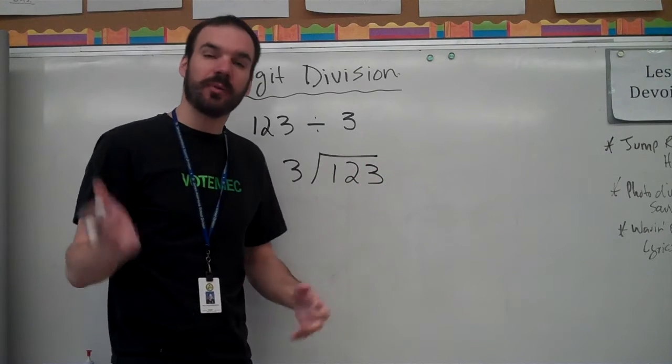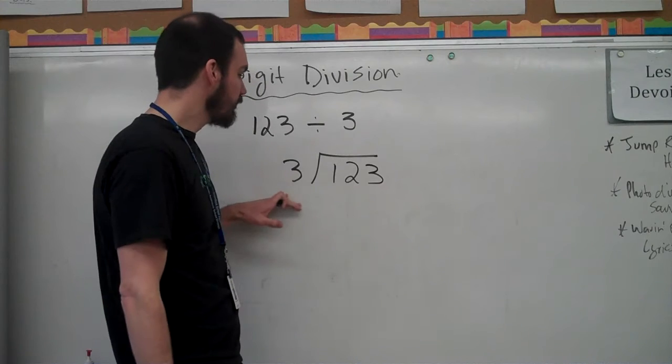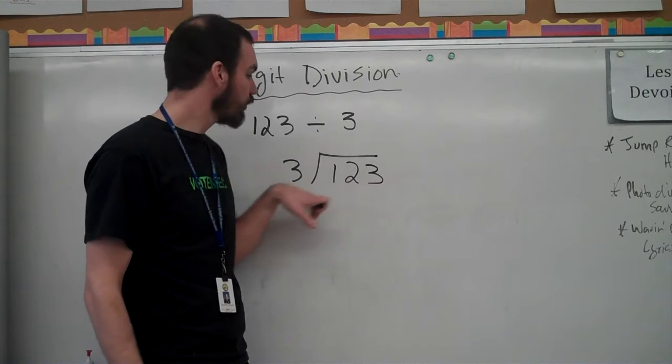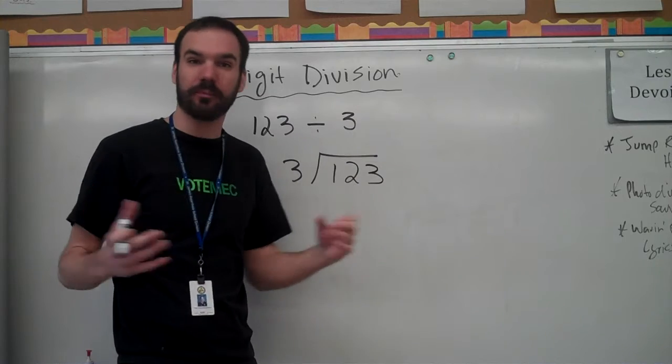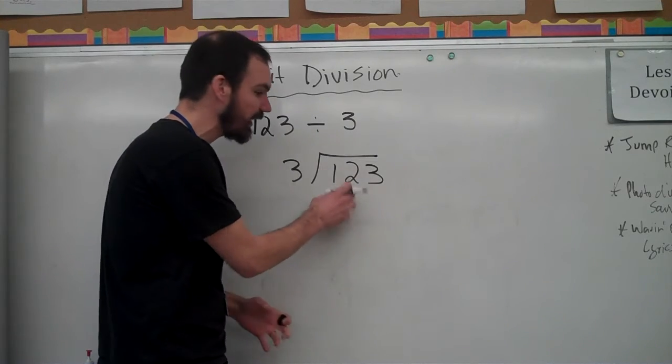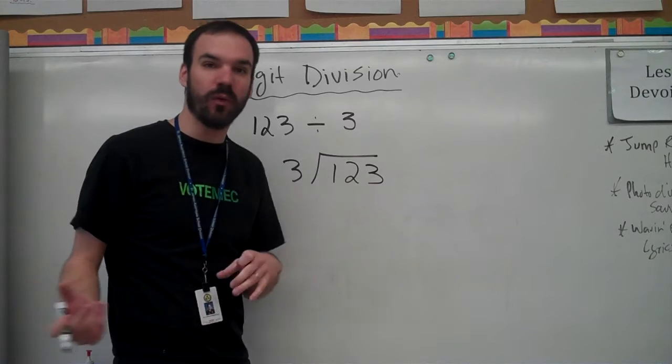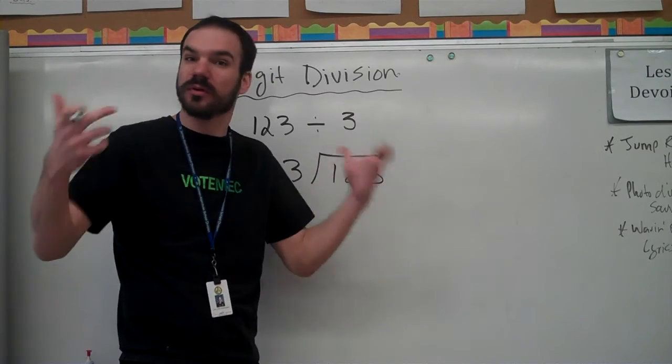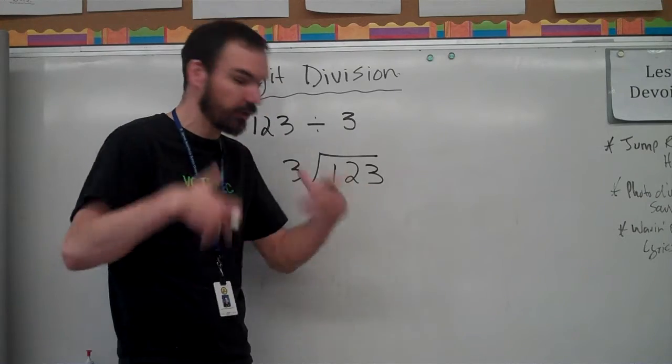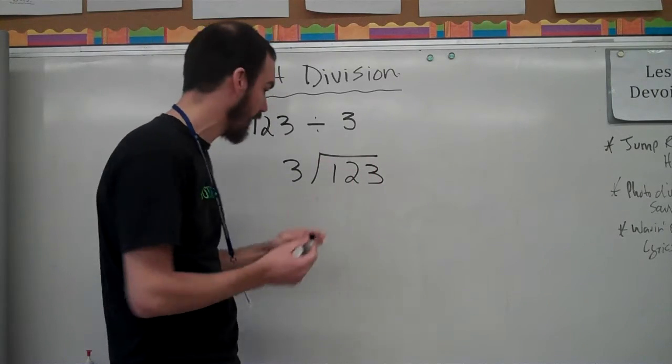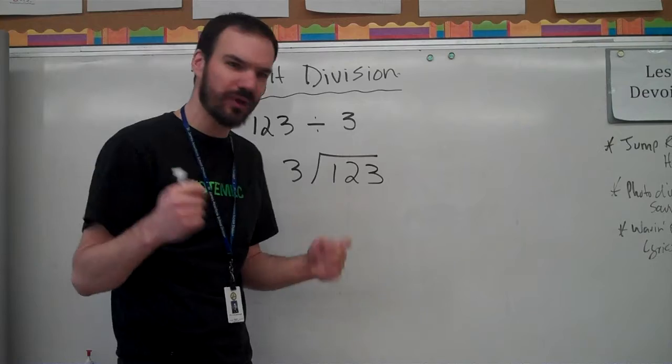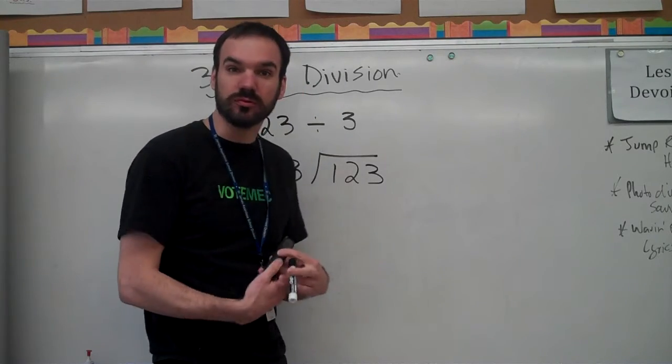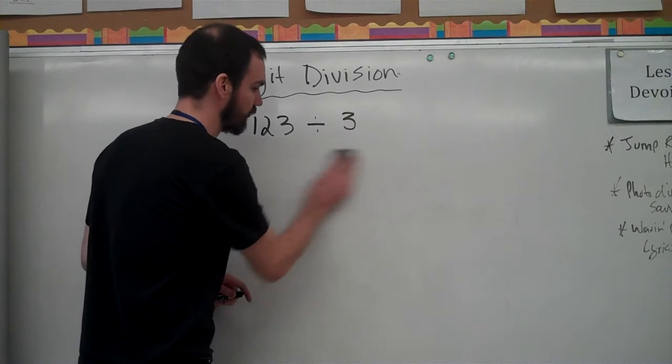And we're used to seeing something like this, which is fine, but as we talked about with partial products, when we do the standard algorithm or the traditional one here, we're not really attacking what's happening. We're not actually dividing the hundreds, the tens, and the ones. And that's a problem when you're 10 or 11 years old. You really want to know what's happening. So let's take a look at a few strategies that we use in the class that you can relate to your student when you're at home talking about this kind of stuff.